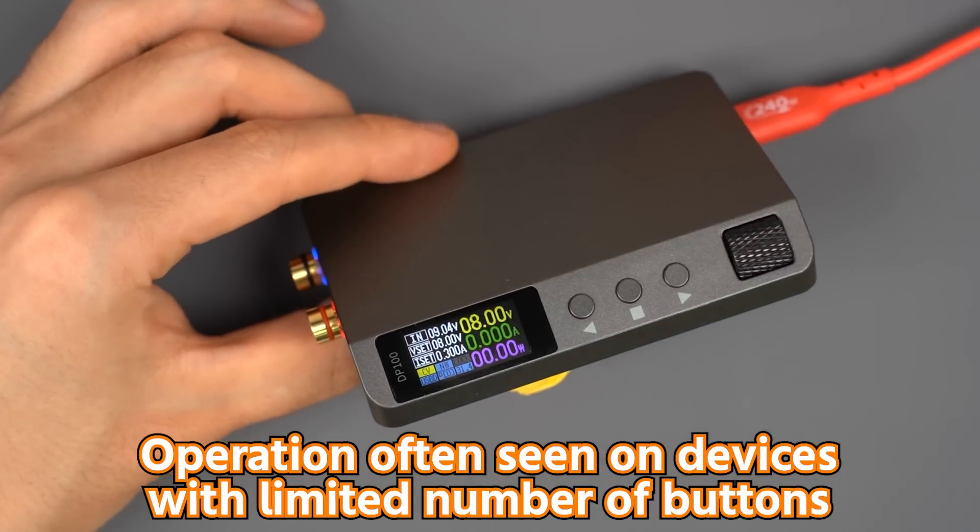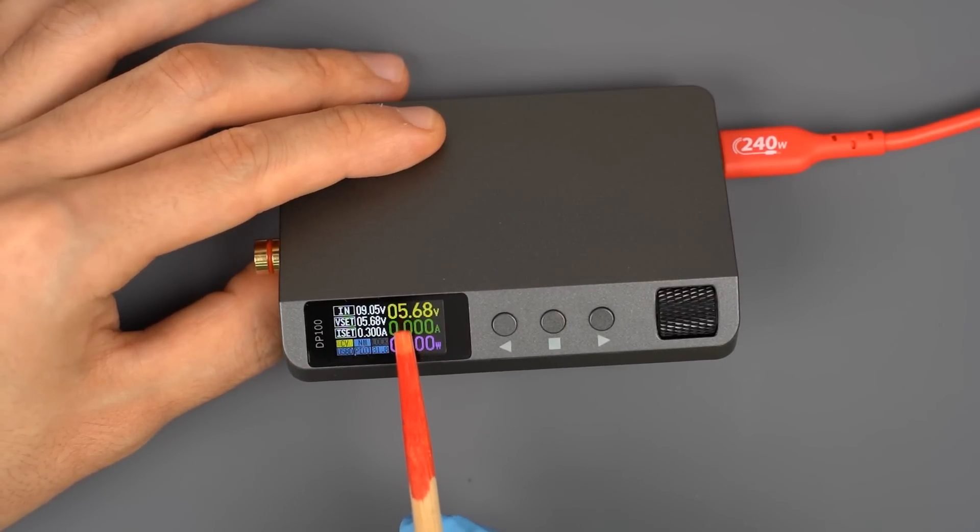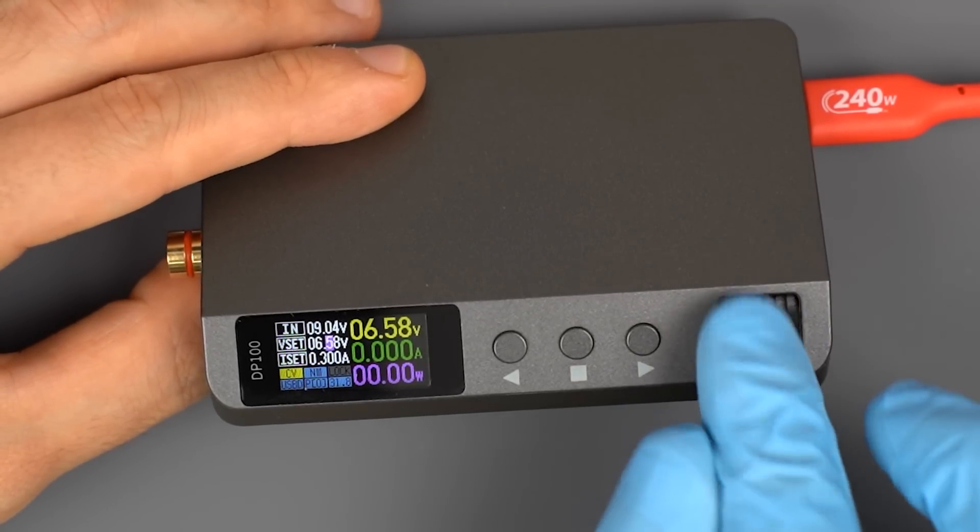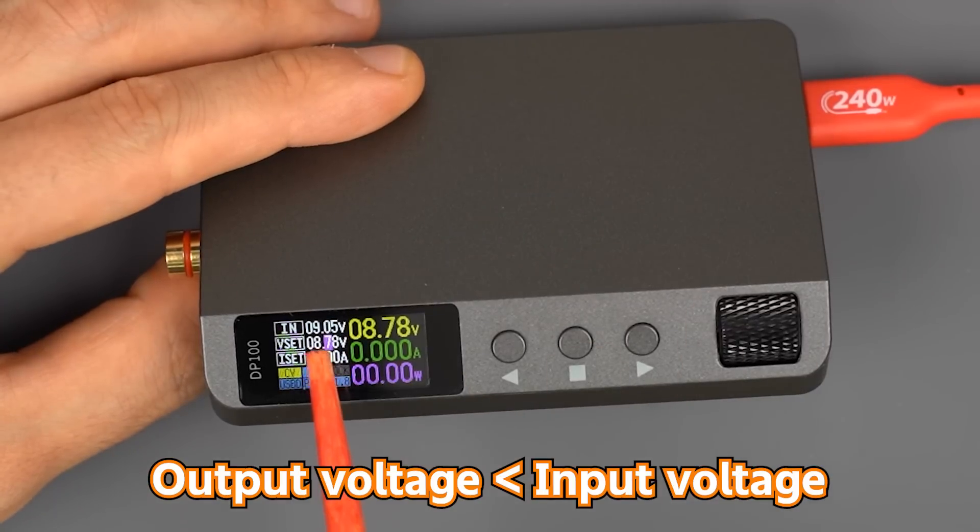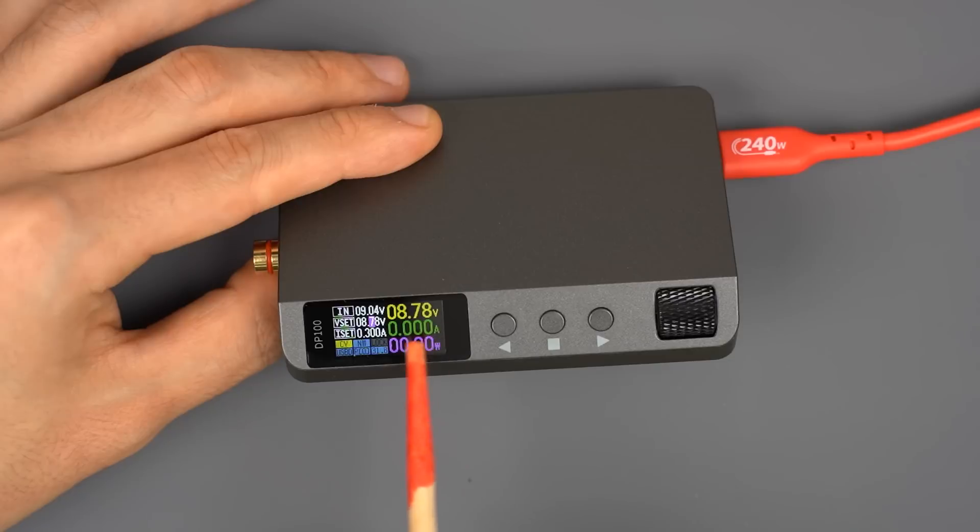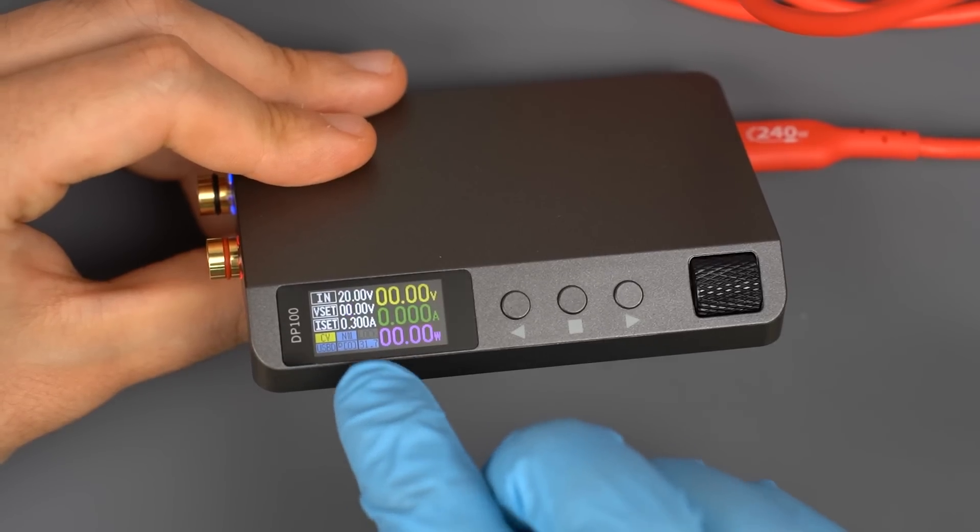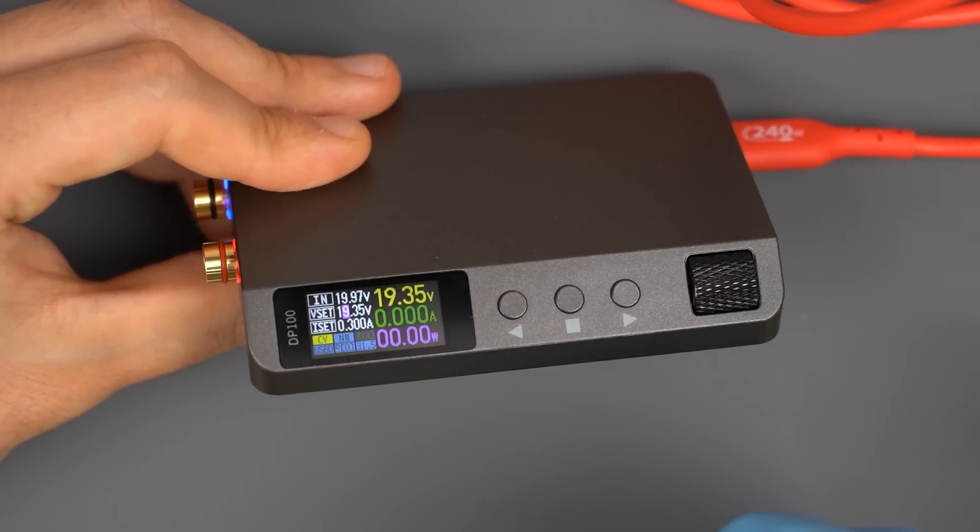This power supply outputs a voltage that's lower than the input voltage. For example, the input voltage is 9 volt now. The upper limit of the output voltage is 8.78 volt. So the output voltage is always lower than the input voltage. It can't output a higher voltage. I connected it to my USB charger, whose PD voltage limit is 20 volt. The upper limit is around 19.3 volt.